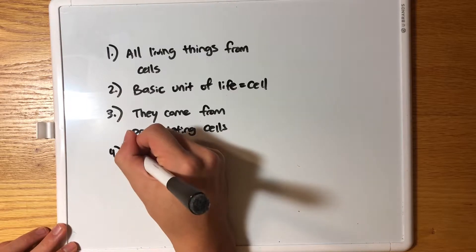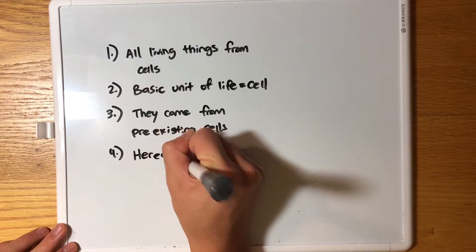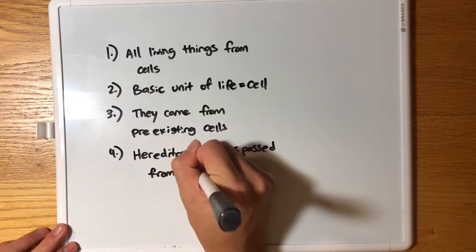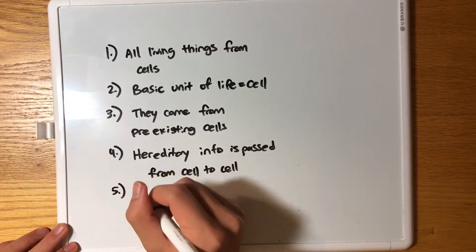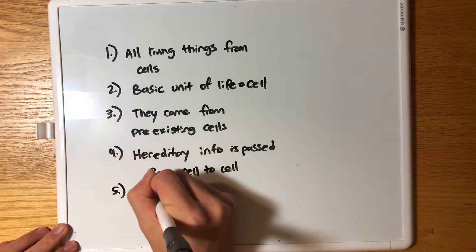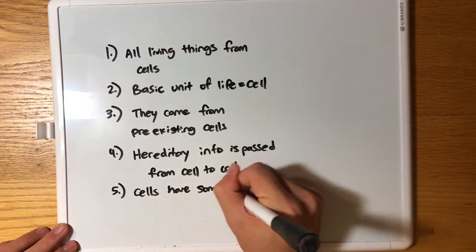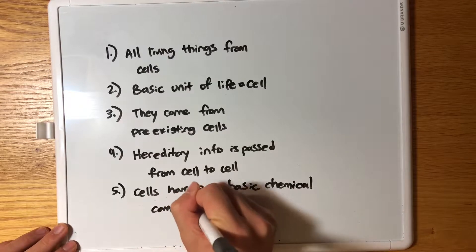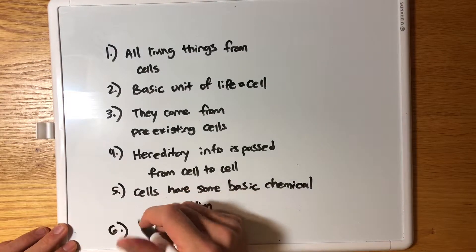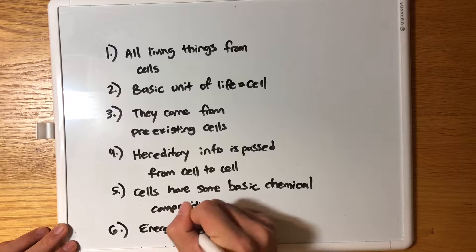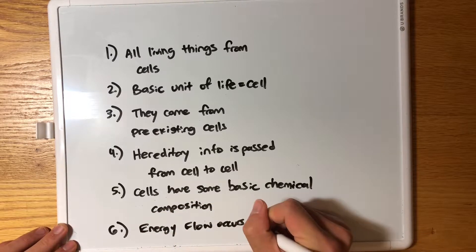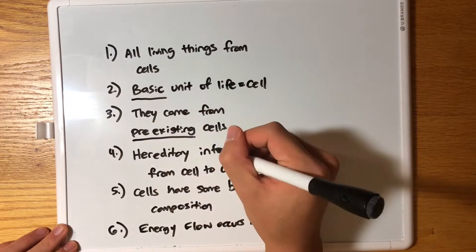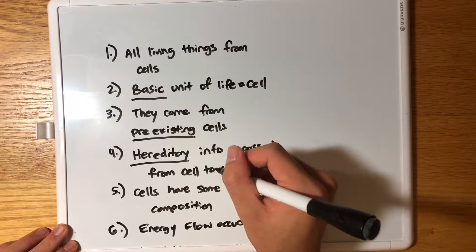Number four: hereditary information can be passed on from cell to cell — that's how reproduction works. Number five: cells have the same basic chemical structure or composition. And number six: energy flow occurs within cells for metabolic reactions.